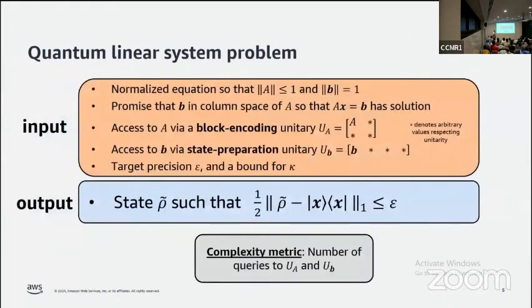We can define the quantum linear system problem formally as follows. We're given as input A and B that satisfy a normalization condition. We're promised that the linear system is consistent. As our input model, we assume access to a unitary block encoding of matrix A and a state preparation unitary that prepares the state |b⟩. Finally, we're given the value of κ and a target precision parameter ε.